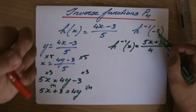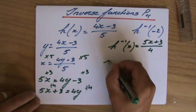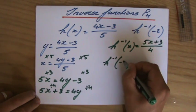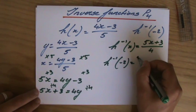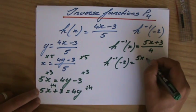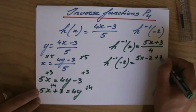I'm not finished yet, because I have to evaluate it for x = -2. That's not difficult. It's 5 times -2, plus 3, over 4.